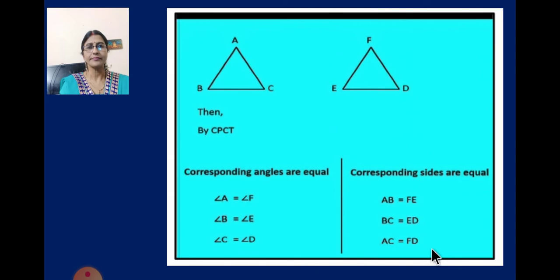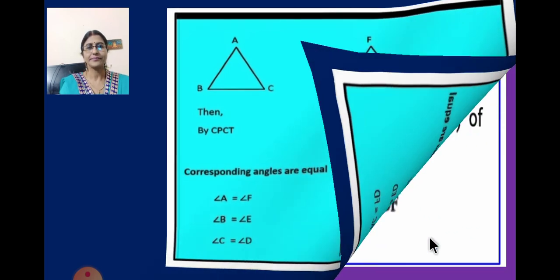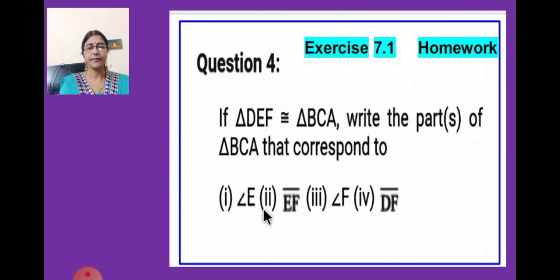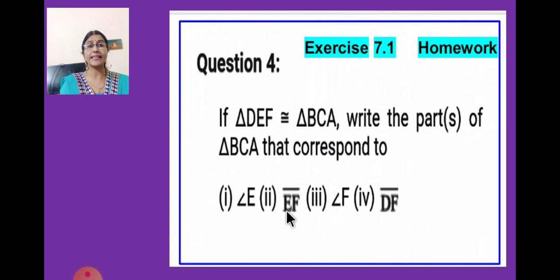Now children, question number 4 is your homework. If triangle DEF is congruent to triangle BCA, write the parts of triangle BCA that correspond to angle E, side EF, angle F, and side DA. The same way we did question number 3, you will do question number 4. You have to draw the figure, then only you will understand which angle corresponds to angle E, which side corresponds to EF, which angle corresponds to angle F, and which side corresponds to DA.